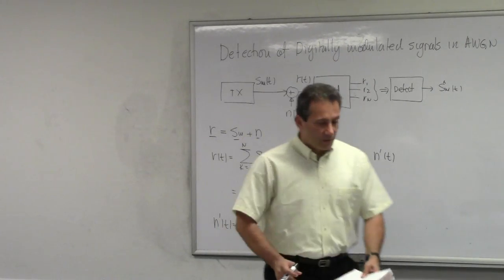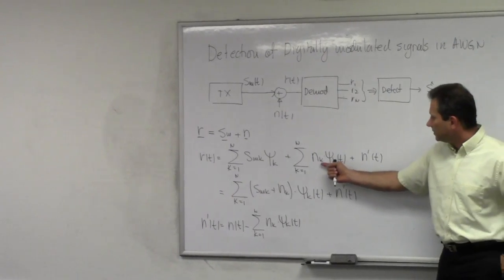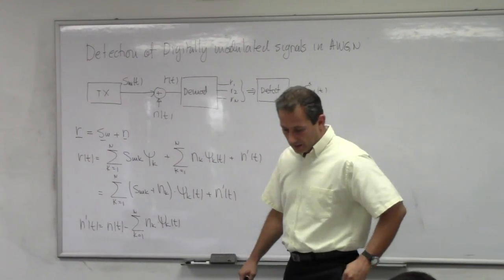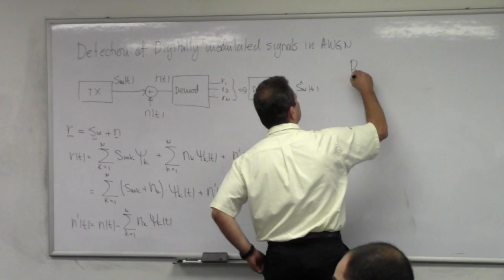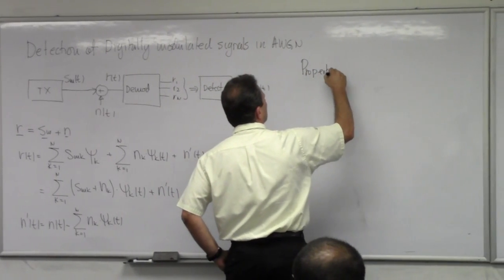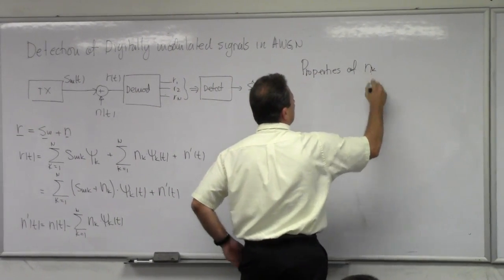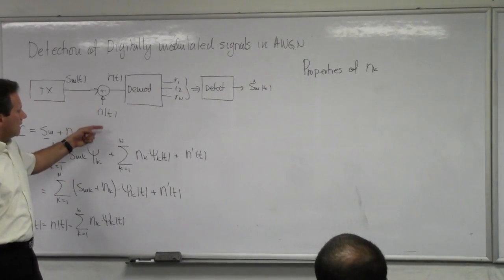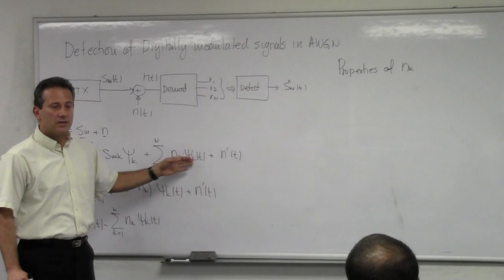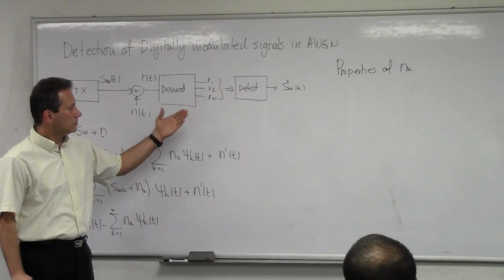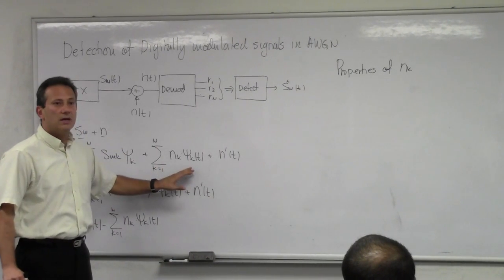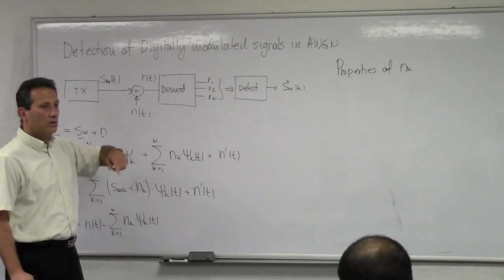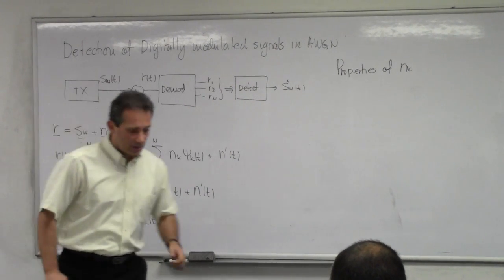So what we really want to understand is what are the properties of Nₖ. Nₖ is the projection of the noise along ψₖ — it is the dot product between N(t) and ψₖ(t). That's the noise component along the K-th direction in the signal space.